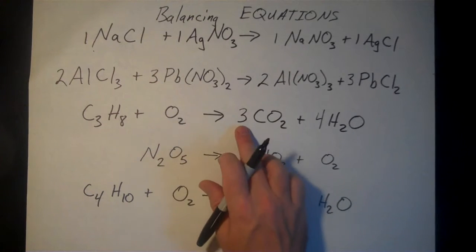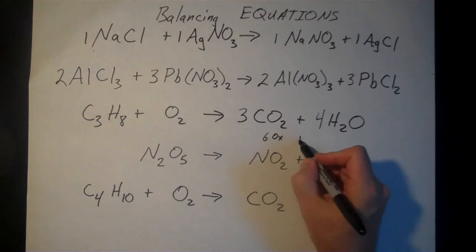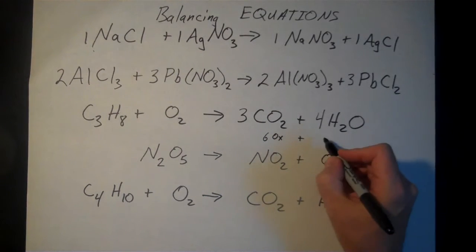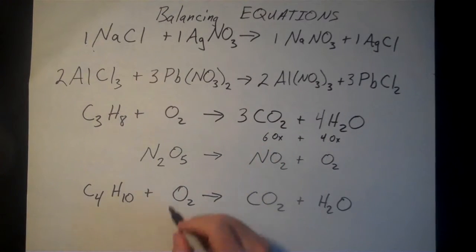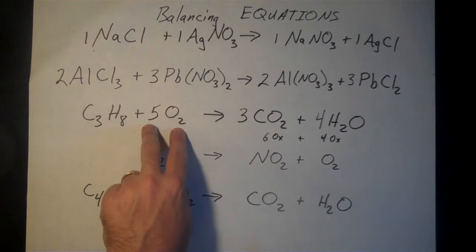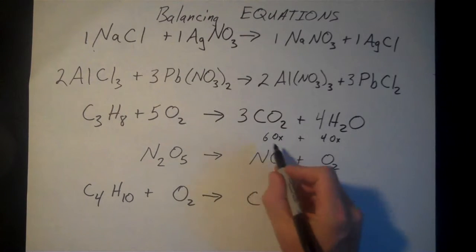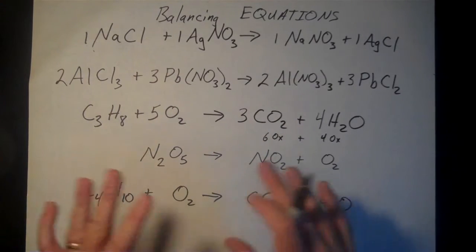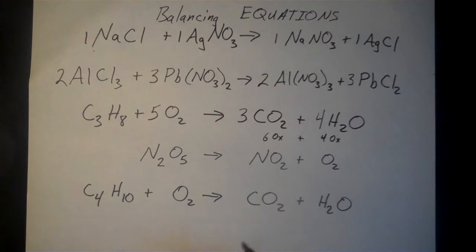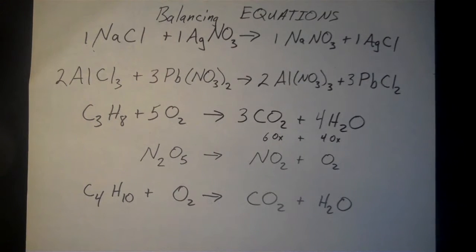Now we can balance the oxygen. There are three times two equals six oxygens from the CO2, plus four times one equals four oxygens from the H2O — six plus four is ten total oxygens on the product side. To get ten on the reactant side, we'll put a five in front of O2 — five times two is ten oxygens. I didn't need a coefficient in front of C3H8, so if it's just a one, we usually leave it blank.